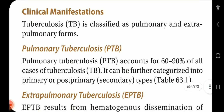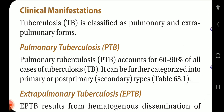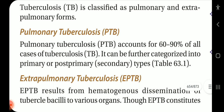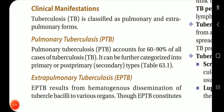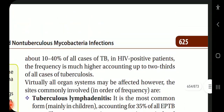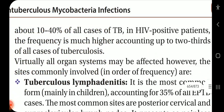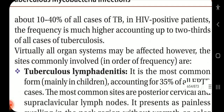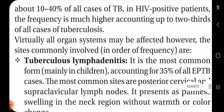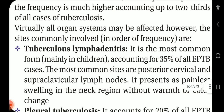Clinical manifestations: TB is classified as pulmonary and extra-pulmonary forms. Pulmonary TB accounts for 60–90% of all cases and can be further categorized into primary, post-primary, or secondary types. Extra-pulmonary TB (EPTB) results from hematogenous dissemination to various organs. Though EPTB constitutes about 10–40% of cases overall, in HIV-positive patients the frequency is much higher, accounting for up to two-thirds of all tuberculosis cases.